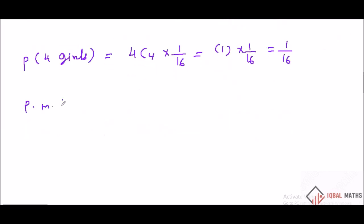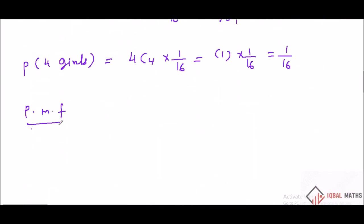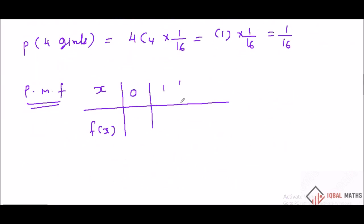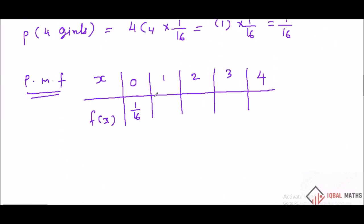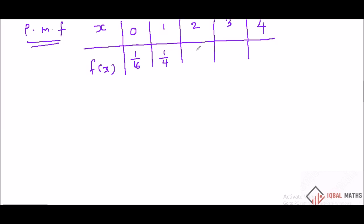Probability mass function summary. x takes values 0, 1, 2, 3, 4. P of X equal to 0 is 1 by 16. P of X equal to 1 is 1 by 4. P of X equal to 2 is 3 by 8. P of X equal to 3 is 1 by 4. P of X equal to 4 is 1 by 16.